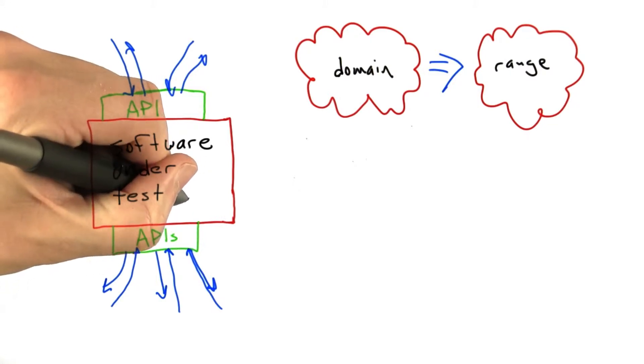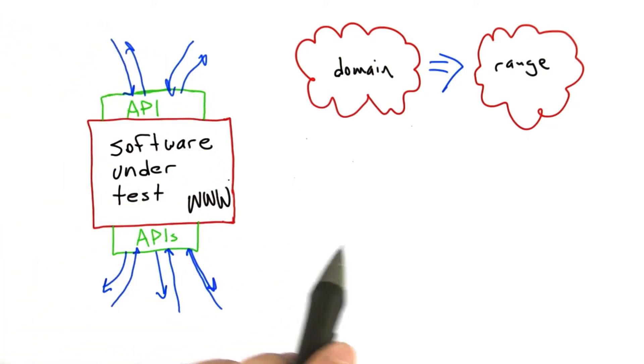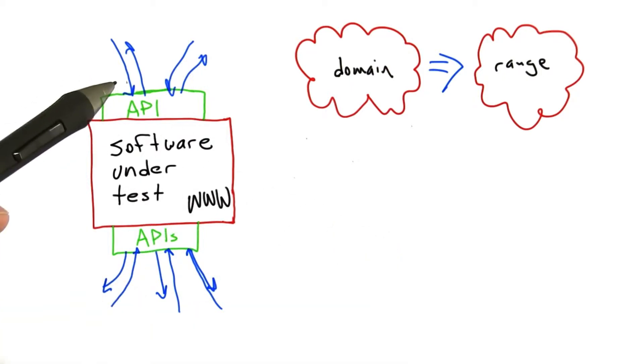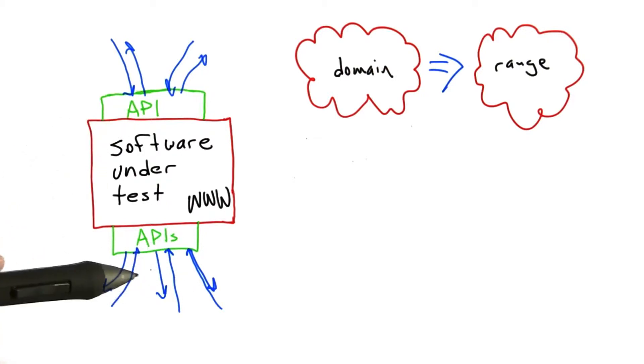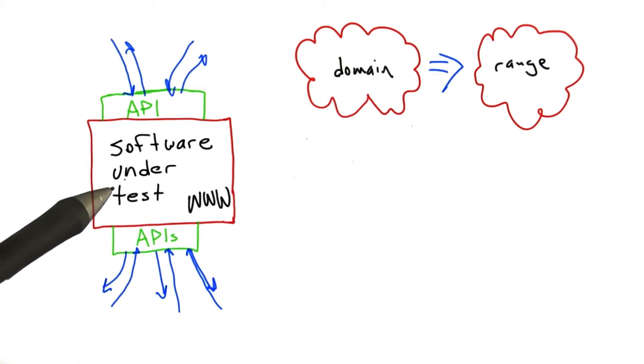Now one thing we can do is test the web browser using the APIs that it provides, that is to say using its graphical user interface, and not worry about testing it with respect to the APIs that it uses. And so what kind of APIs is the web browser using?